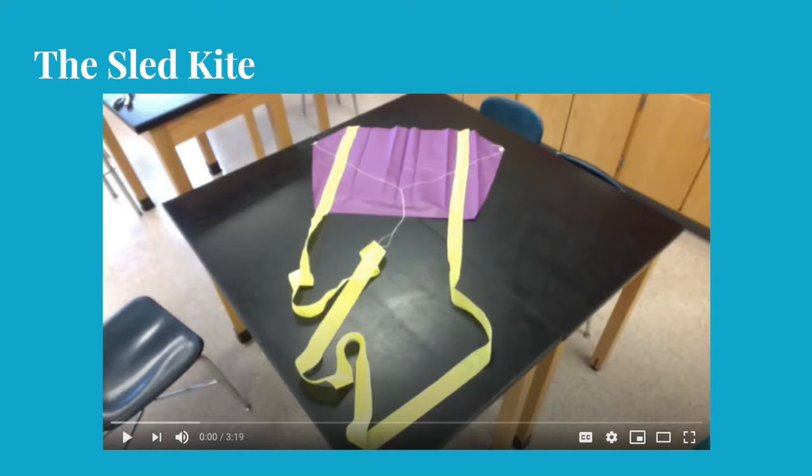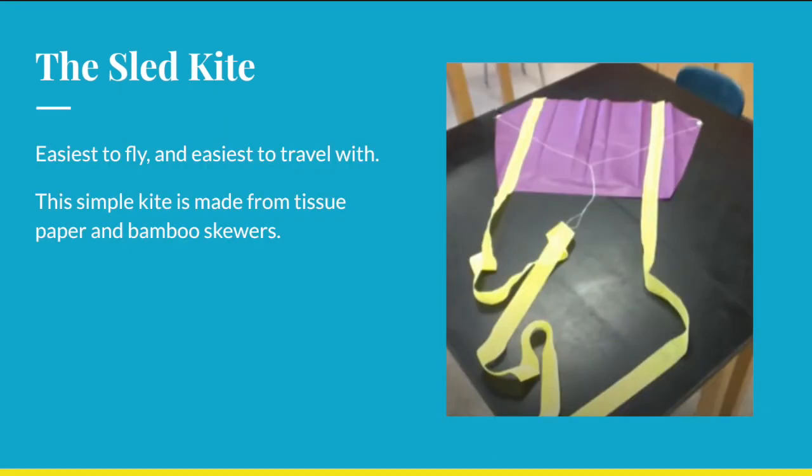The next type of kite is called a Sled Kite, designed by Mr. Bingaman himself. It is the easiest kite to fly in low wind conditions and can be rolled up for easy travel. One disadvantage is this kite will collapse in on itself in high winds. Its body is made from tissue paper and bamboo skewers while the tail is crepe paper streamer.